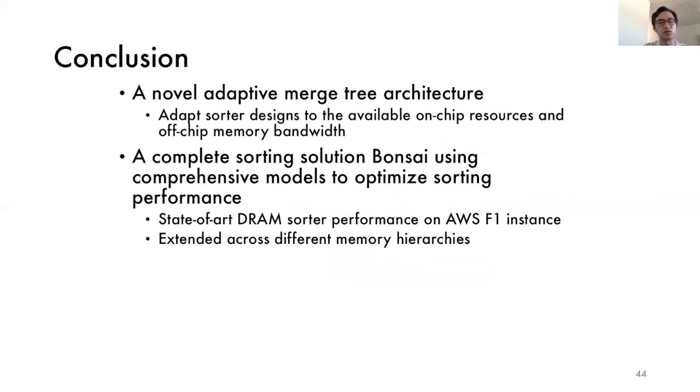So in summary, in this work, we propose a novel adaptive merge tree architecture that adapts sorter designs to the available chip resources and off-chip memory bandwidth. Based on that, we build Bonsai, a complete sorting solution that uses comprehensive models to optimize sorting performance. With Bonsai, which achieves state-of-the-art DRAM sorter performance on AWS, and we also extend our analysis across different memory hierarchies. That concludes our presentation. Thank you for listening.